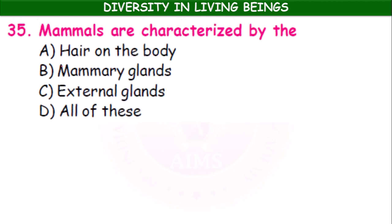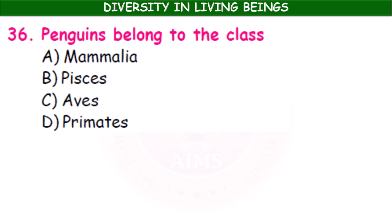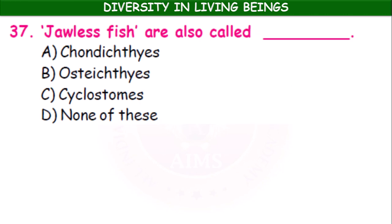Mammals are characterized by hair on the body, mammary glands, and external ears — all of these. Penguins belong to the class Aves. Jawless fish are also called cyclostomes.